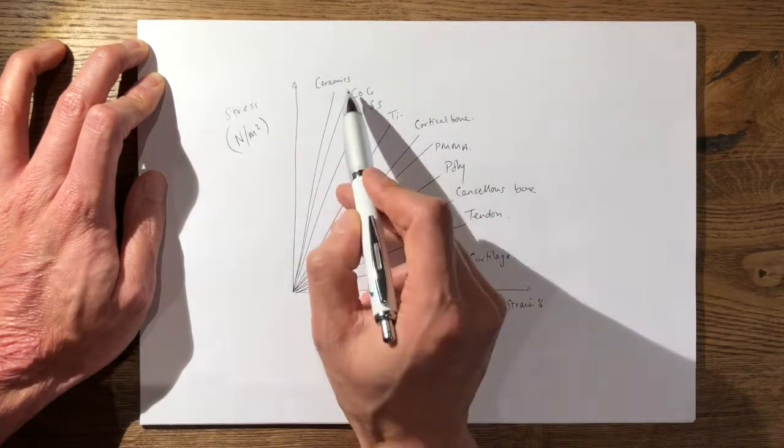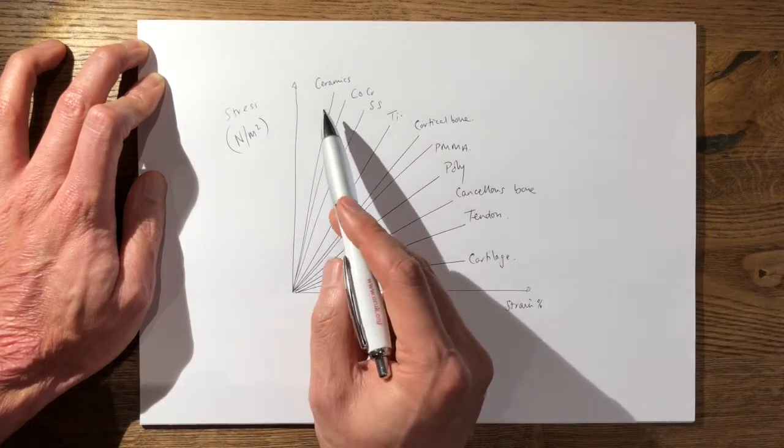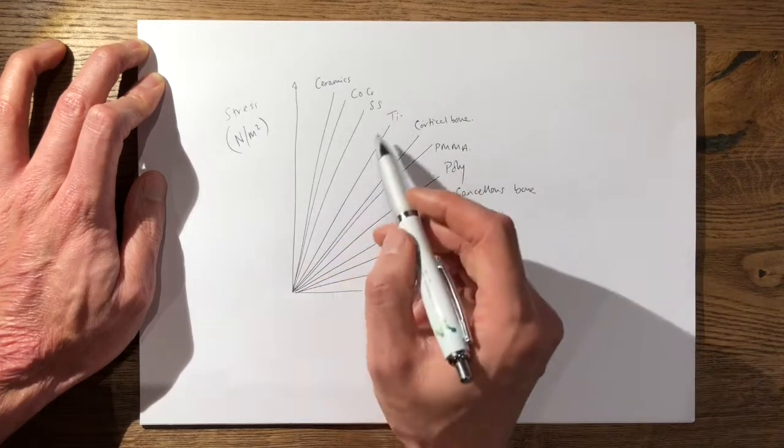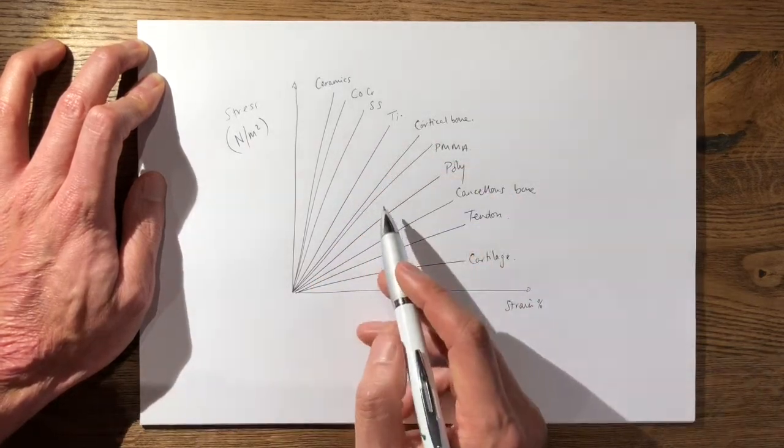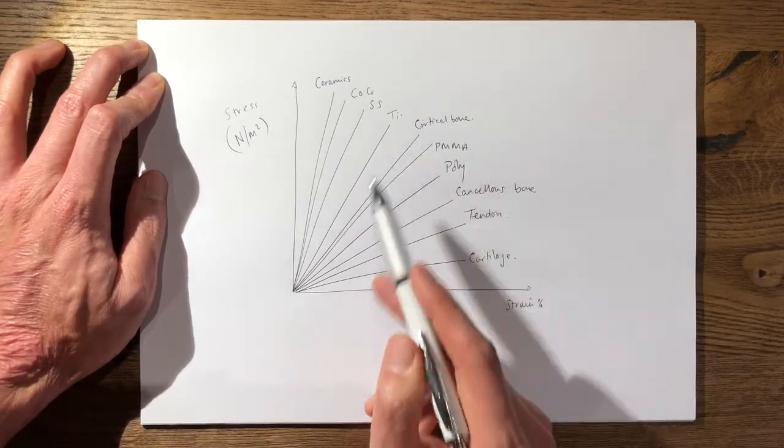This is also the reason why you don't see cobalt chrome used in hip stems and you're more likely to see a material such as titanium because it has a more similar Young's modulus to cortical bone.